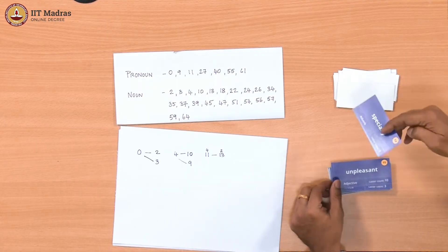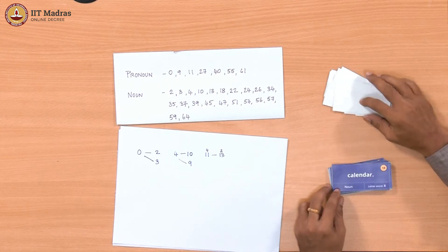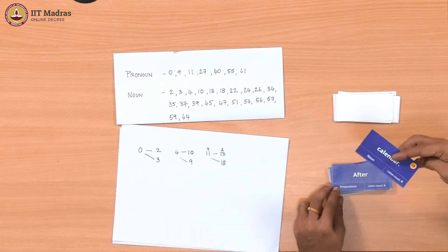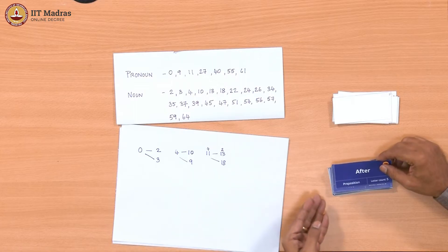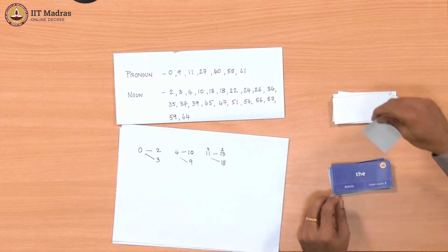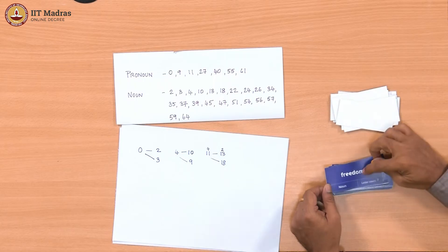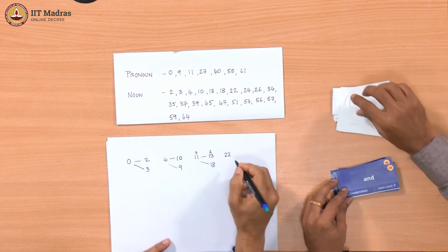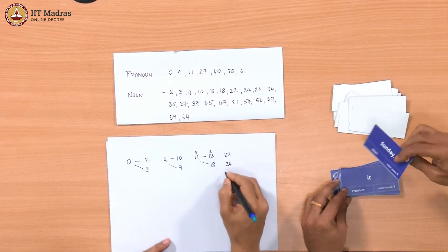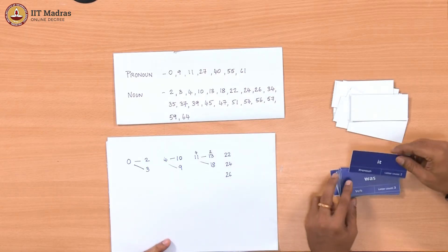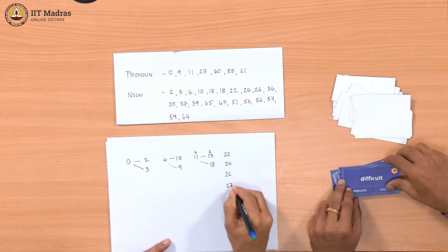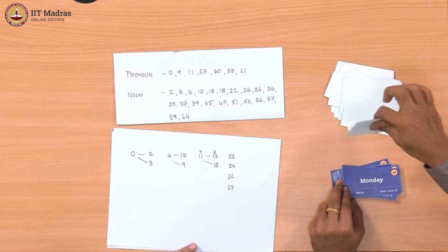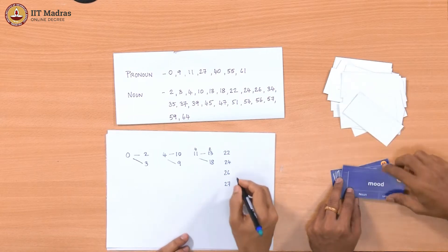Monday — specially unpleasant in the calendar, which is node 18 — that is connected. Then the sentence boundary came, so we are done with that sentence. Otherwise every sentence will look very different — something has to link between sentences, and it is the same word. After the delicious freedom — freedom is node 22 — of Saturday, so 22 and 24. And Sunday, that is 26. So these are all disconnected right now. 'Was' is the connecting word — so node 27 also.